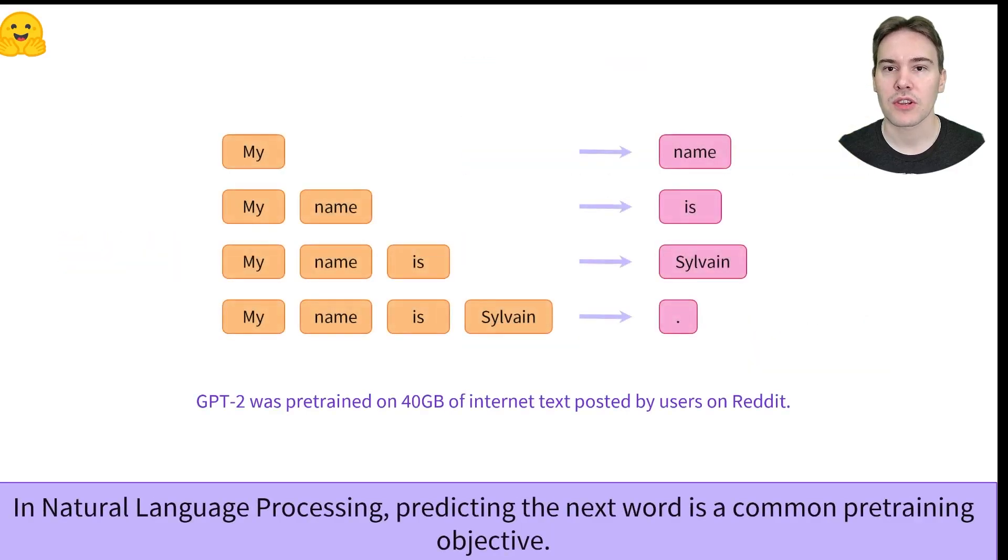In natural language processing, transfer learning is a bit more recent. A key difference with ImageNet is that the pre-training is usually self-supervised, which means it doesn't require human annotation for the labels. A very common pre-training objective is to predict the next word in a sentence, which only requires lots and lots of text. GPT-2, for instance, was pre-trained this way using the content of 45 million links posted by users on Reddit.